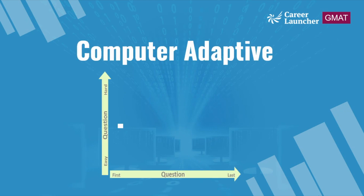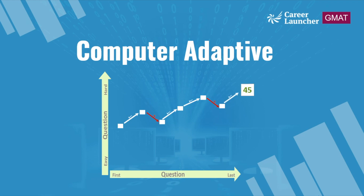The quant section in GMAT is computer adaptive. The first question you receive will be of medium difficulty. As you answer each question, the computer scores your answer and uses it along with your responses to preceding questions to select the next question. If you answer correctly, the next question will be harder; if incorrectly, it will be easier. This continues until you complete the section, giving the computer an accurate assessment of your ability.